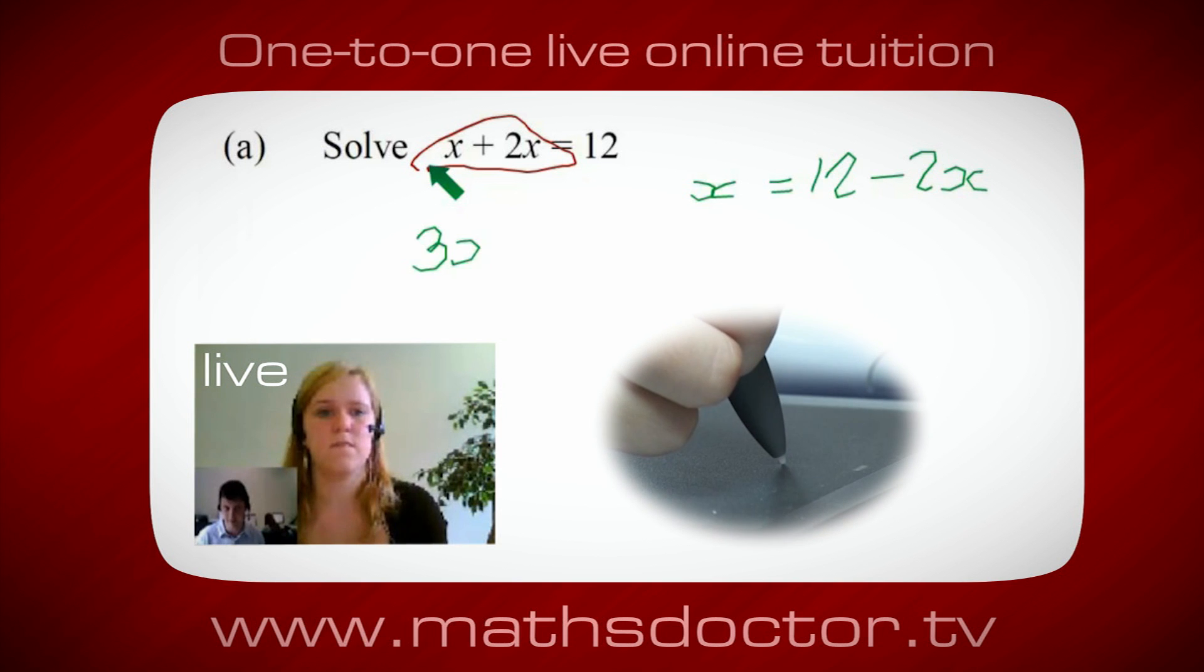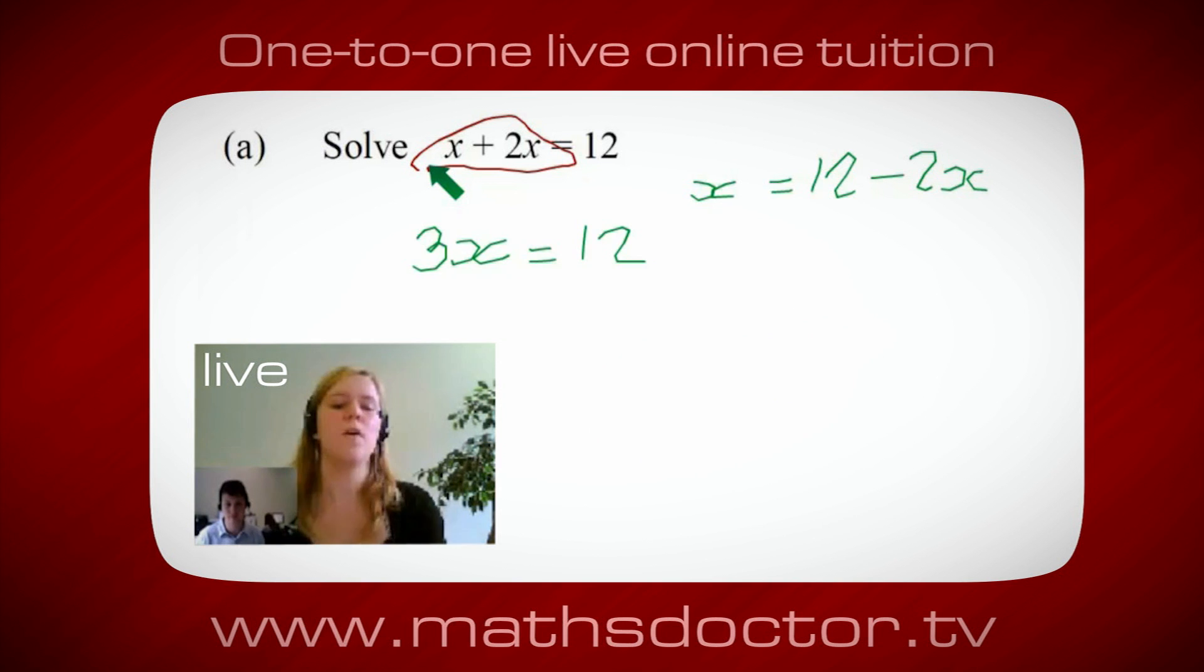It's 3x, isn't it? Yeah, absolutely. So 3x equals 12. And so x equals 4. Brilliant, spot on, well done.